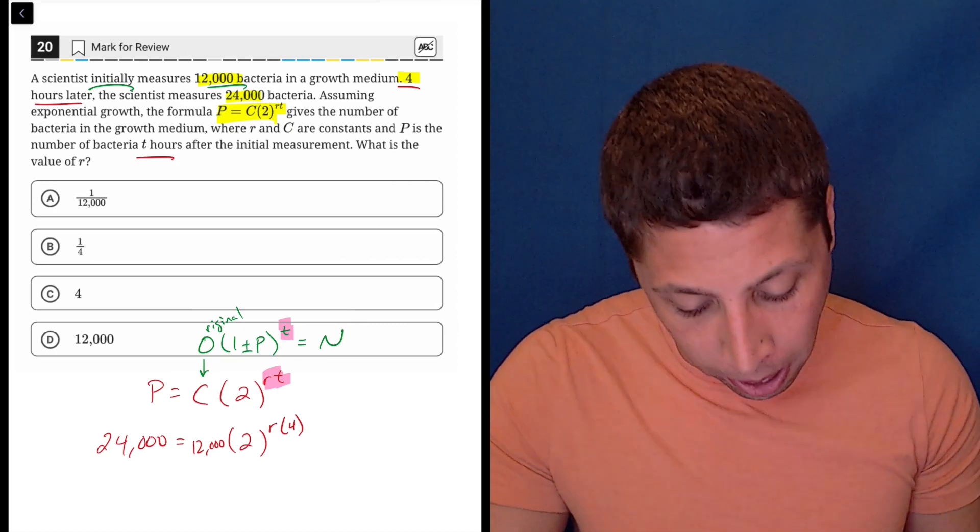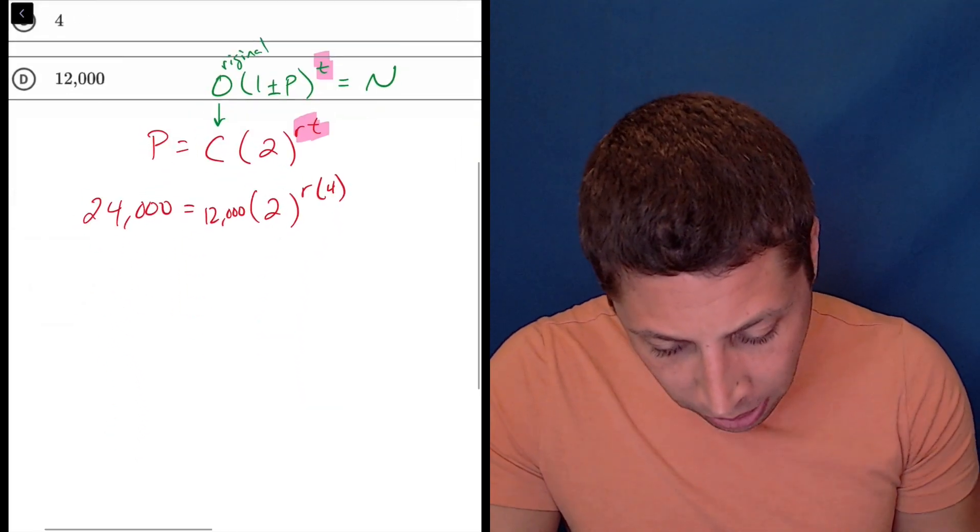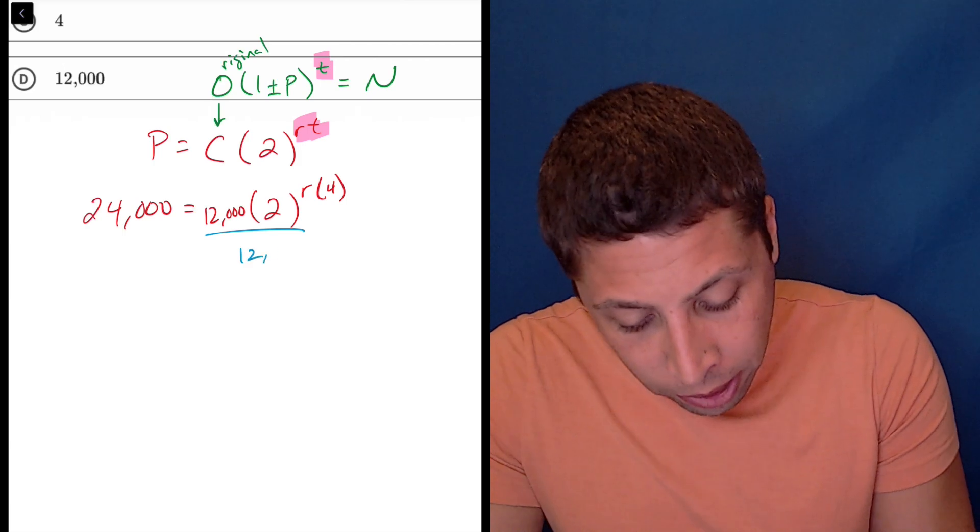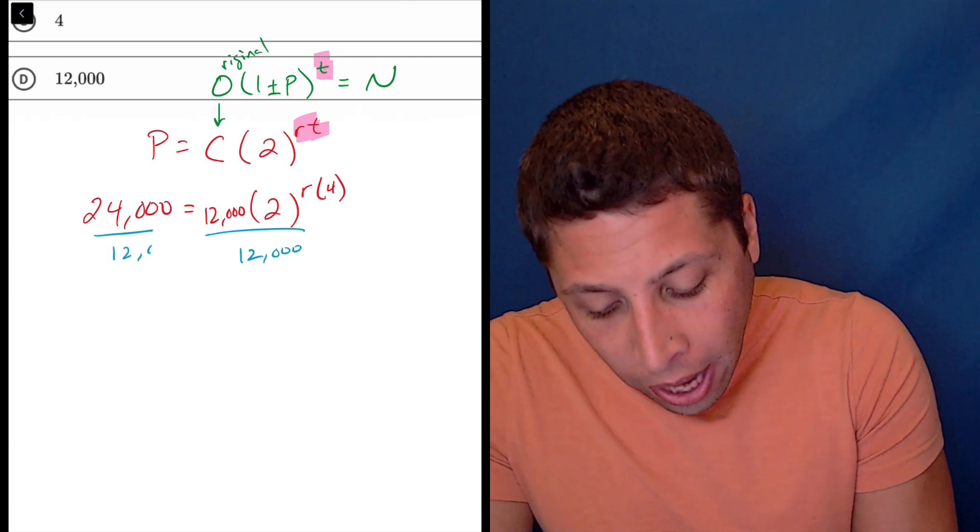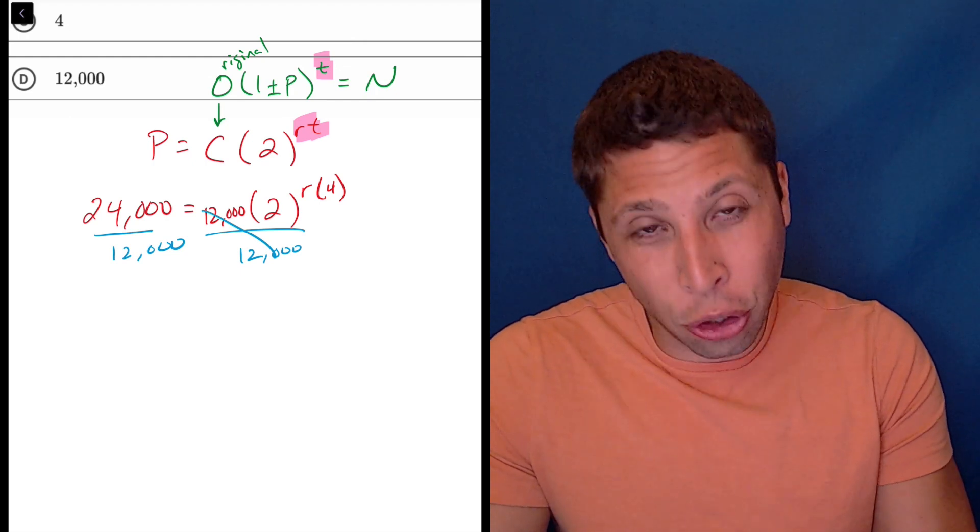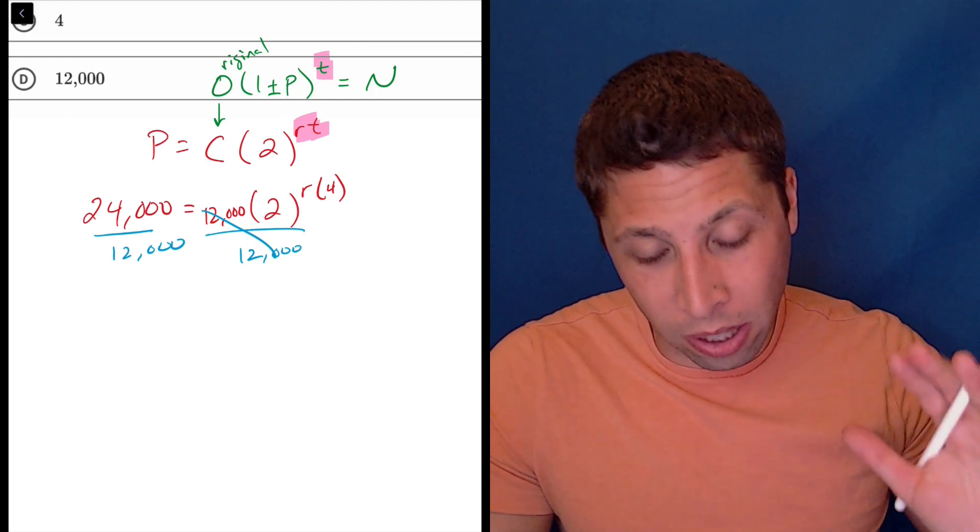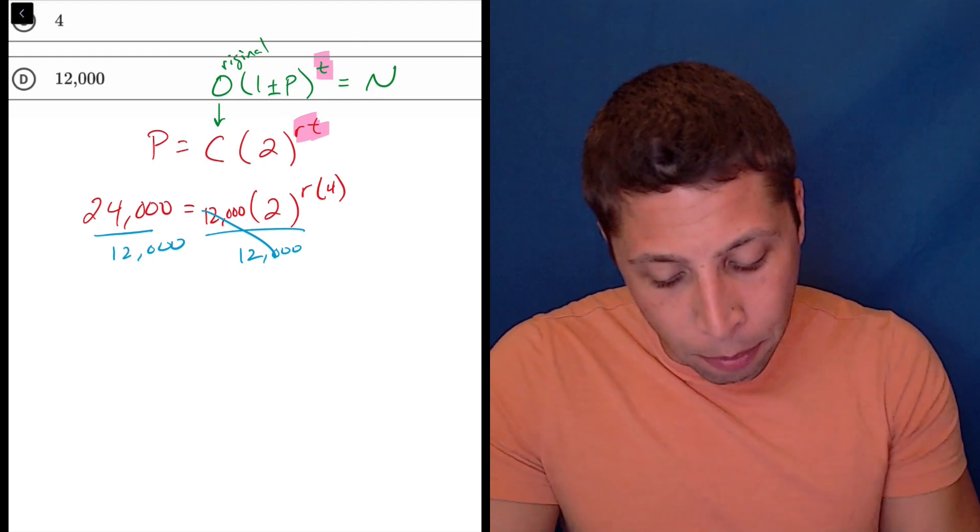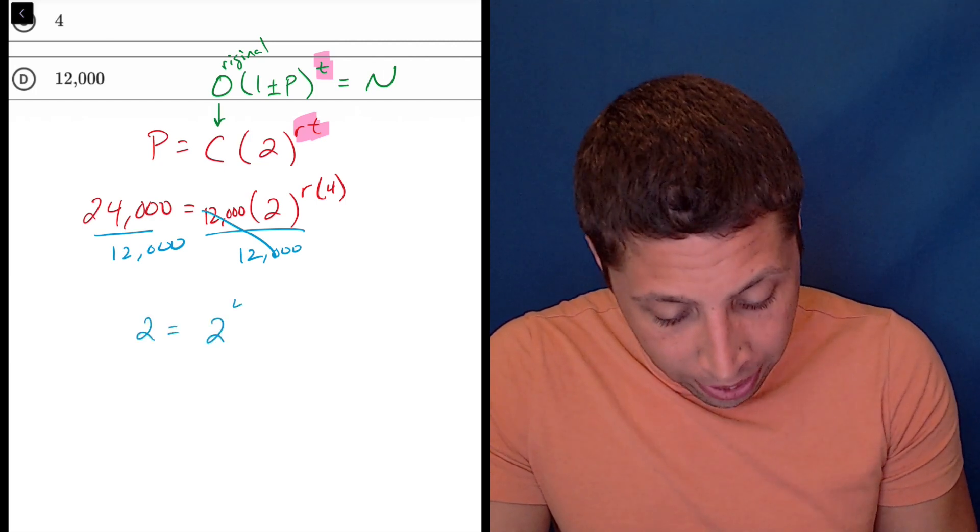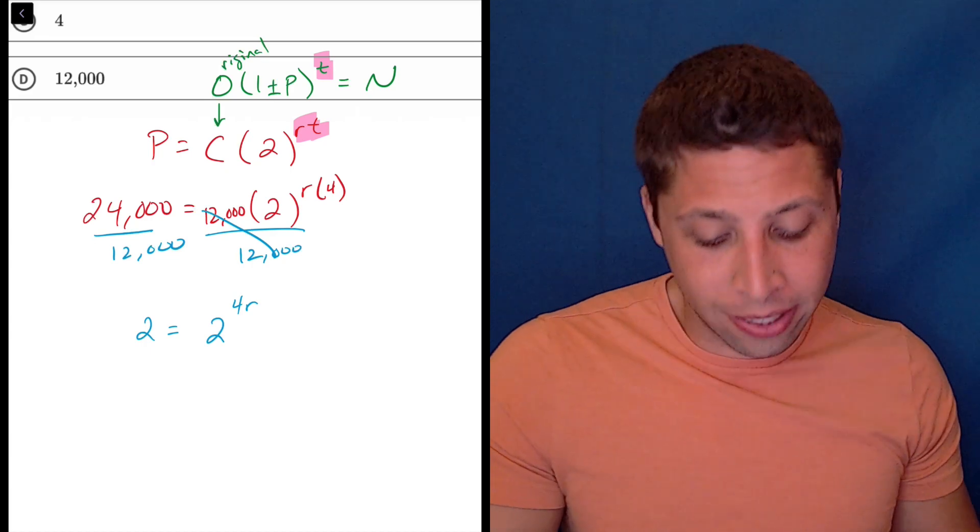What I would do here is just start simplifying. To clean this up, I would get rid of the 12,000 on each side. I can't really touch the 2 to the R times 4 because that's all its own thing, but 24,000 divided by 12,000 is just 2, and then 2 to the 4R. We can see what's going on here.